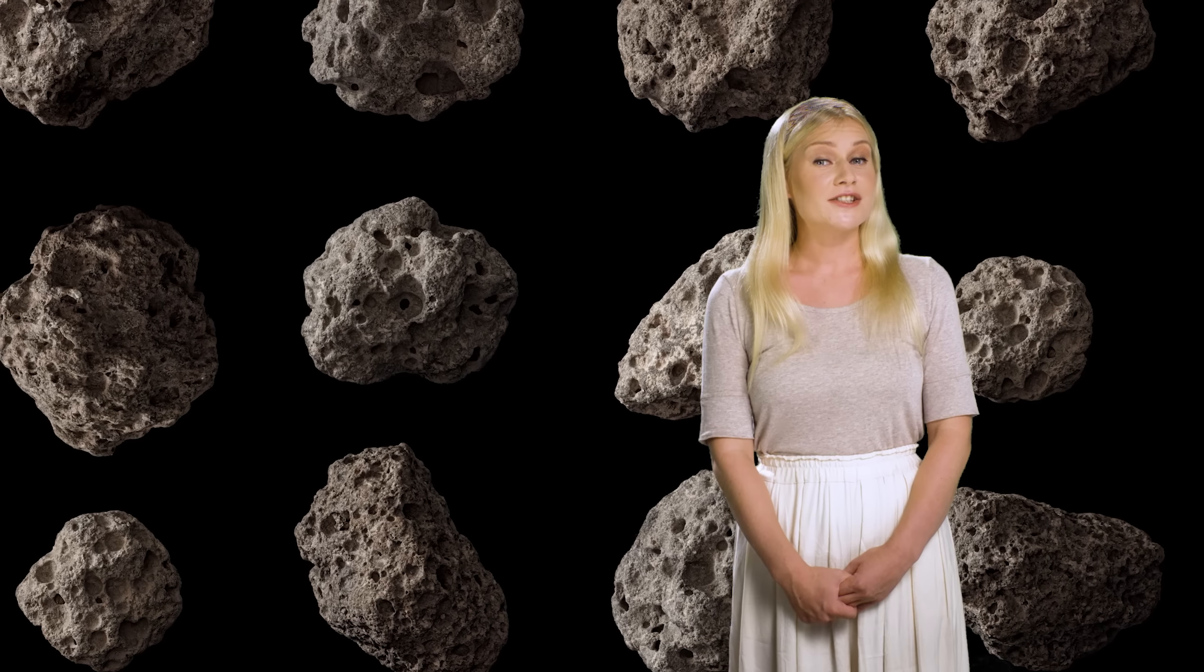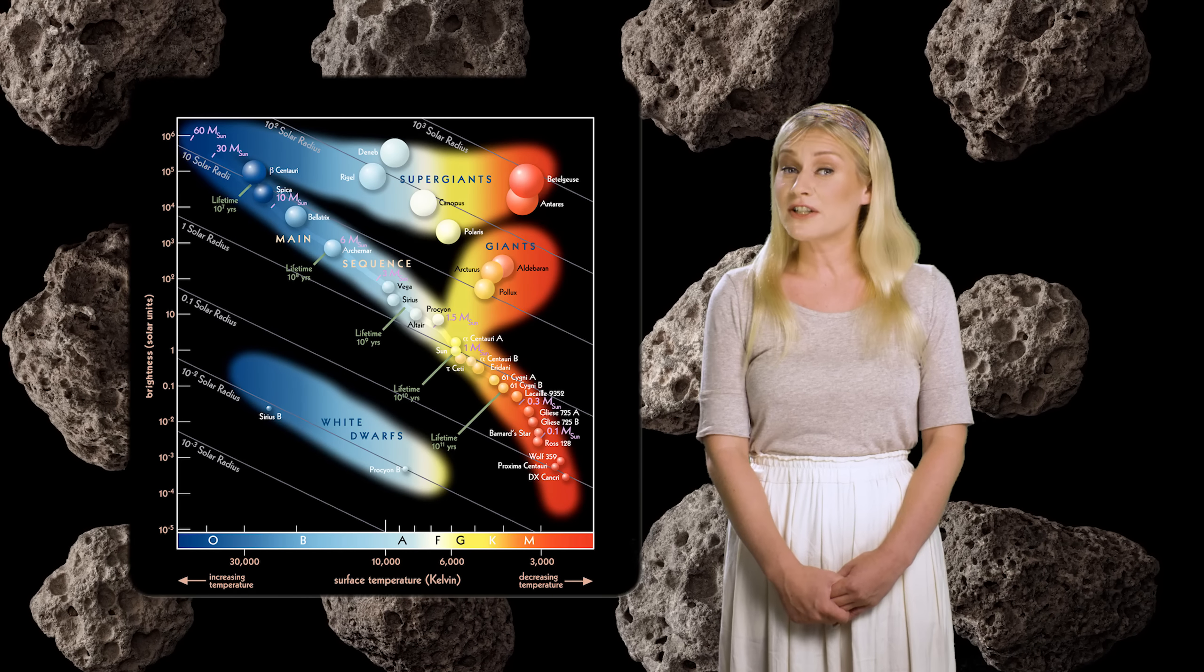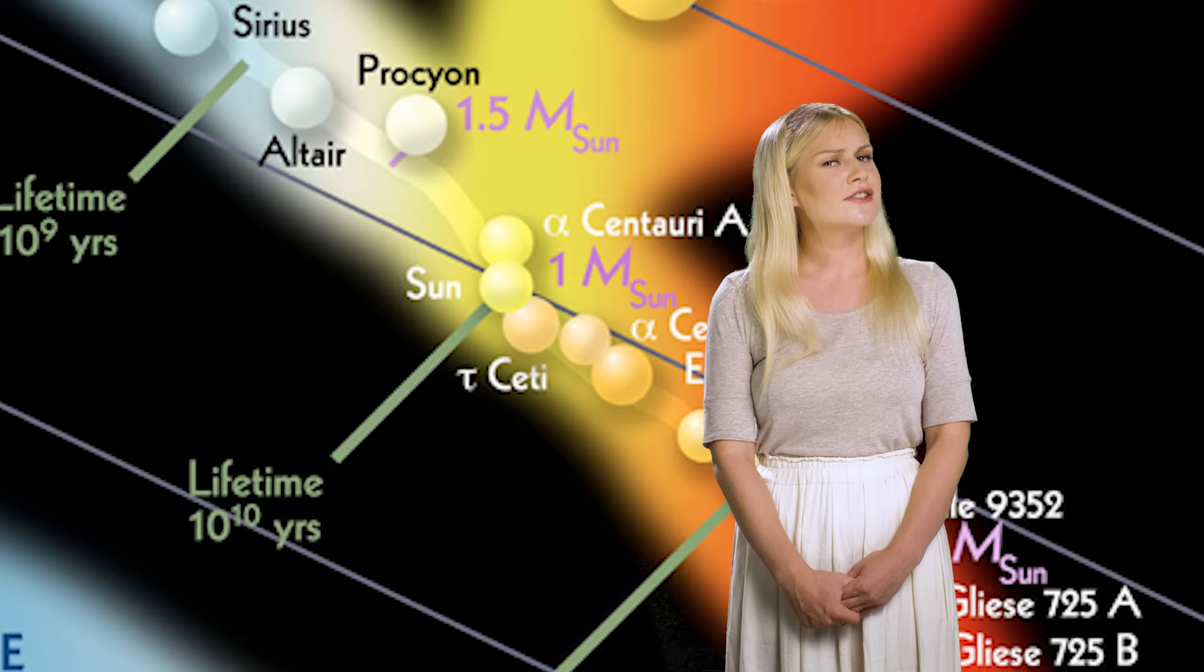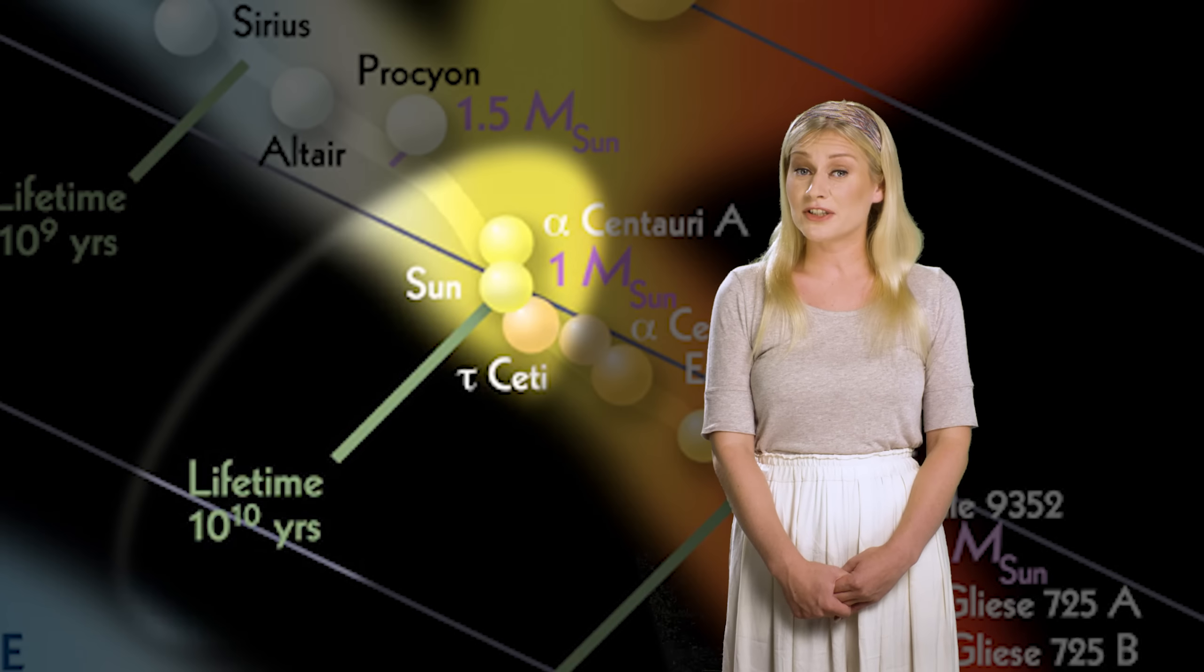Simultaneously, by studying and modeling various solar mass stars at different evolutionary stages, we know that stars like the Sun live for roughly 10 billion years.